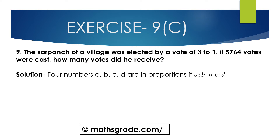Now we will solve question number 9. The sarpanch of a village was elected by a vote of 3 to 1. If 5764 votes were cast, how many votes did he receive? The sarpanch was elected by a vote of 3 to 1, meaning 3 votes for the sarpanch out of every 4 total votes.